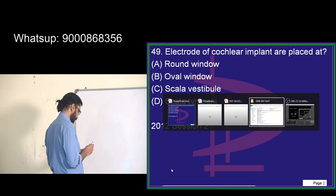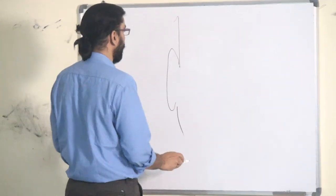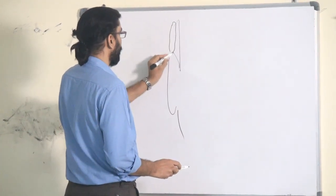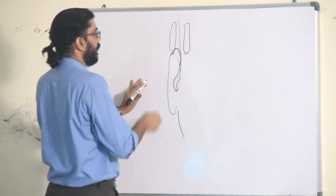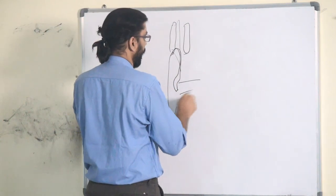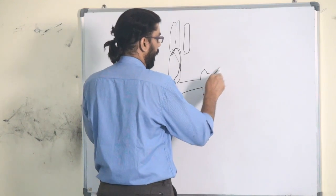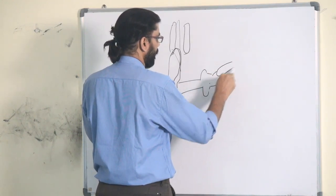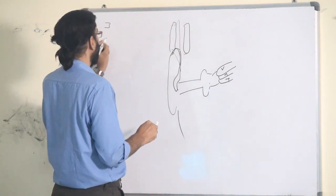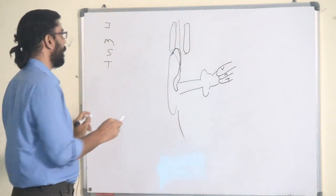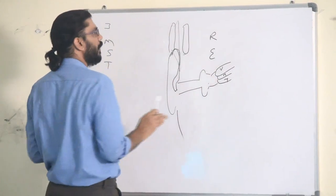The cochlear implant is kept over the ear area — the external part sits like a hearing aid, and the internal device goes inside. The cochlea has three compartments: scala vestibuli, scala media, and scala tympani. The external part consists of the microphone, speech processor, and transmitter; the internal part has the receptor and electrode array.